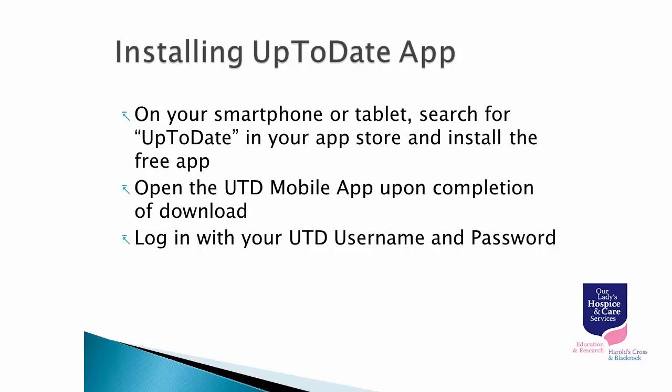Installing the Up-to-date app. On your smartphone or tablet, search for Up-to-date in your app store and install the free app. Open the Up-to-date mobile app upon completion of download. Log in with your Up-to-date username and password.